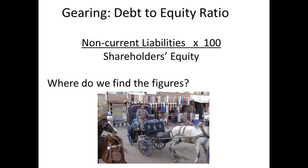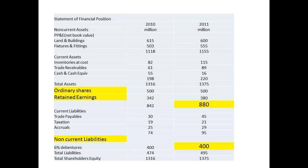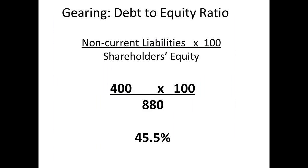The first ratio we will examine is the debt-to-equity ratio. We divide the non-current liabilities by the shareholder's equity. All the figures we need are found on the balance sheet. Non-current liabilities are £400 million and shareholder's equity is £880 million. Dividing 400 by 880 and multiplying by 100 gives us a percentage of 45.5%.